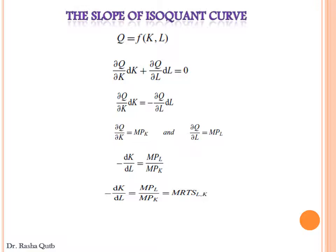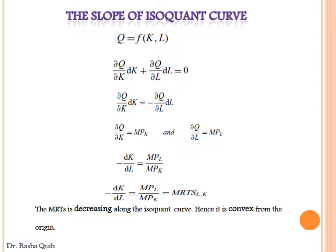In normal cases, the isoquant curve is convex to the origin, which means the marginal rate of technical substitution is decreasing along the same isoquant curve. The slope measures the ratio of the marginal product of labor to the marginal product of capital, equal to the MRTS, and is negative because the same level of output must be maintained along the curve. The MRTS is decreasing because in normal cases the isoquant curve has a convex shape from the origin.